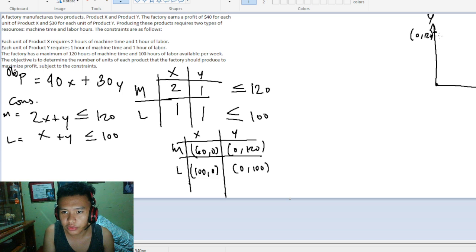Now the labor hours line: 100 comma 0 and 0 comma 100. These are partners, you can't mix them. We connect 60 and 120, then 100 and 100. We're not looking for the unbounded region. The bounded region is enclosed.